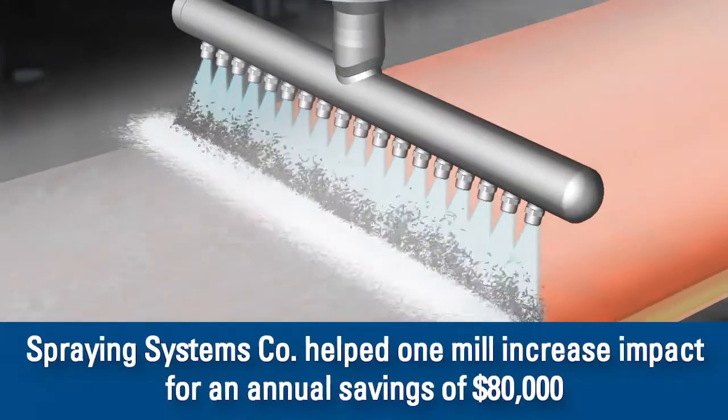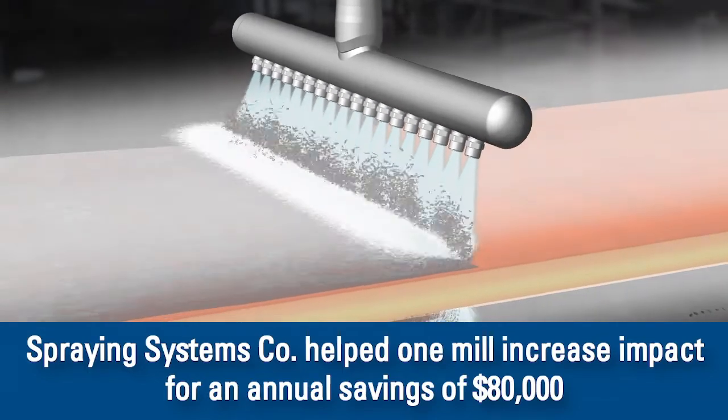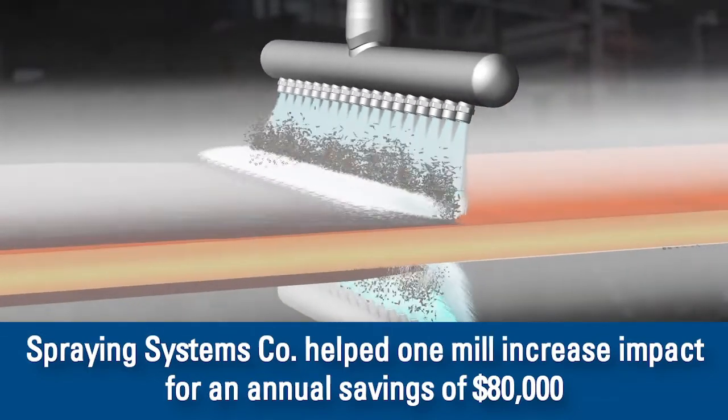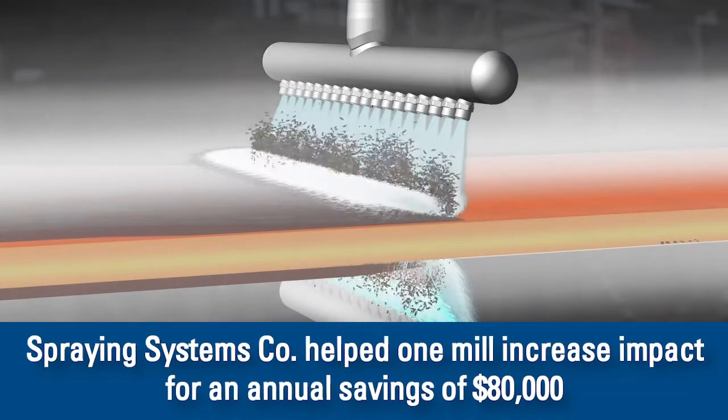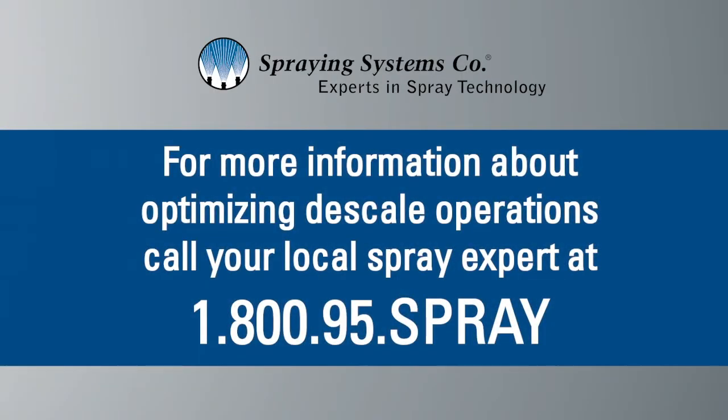Even small changes in your descaling operations can yield big results. We helped one mill increase impact by 15% and improve coverage in overlap zones for an annual savings of $80,000. Why not find out if we can get similar results for you?